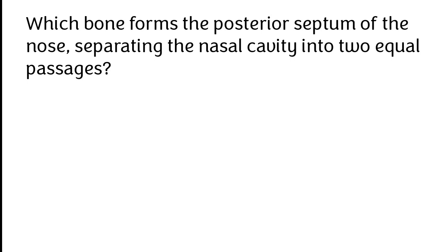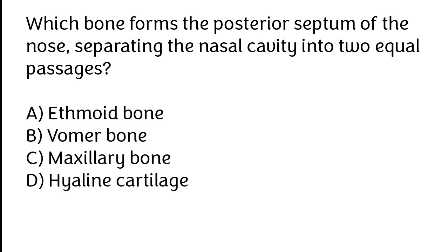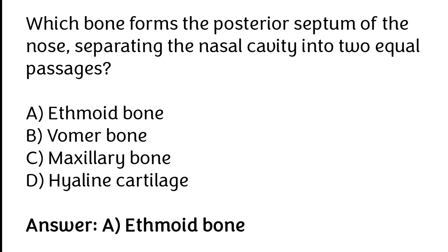Which bone forms the posterior septum of the nose, separating the nasal cavity into two equal pieces? Ethmoid bone, vomer bone, maxillary bone, hyaline cartilage. The correct answer is option A. The ethmoid bone forms the posterior septum of the nose, separating the nasal cavity into two equal pieces.